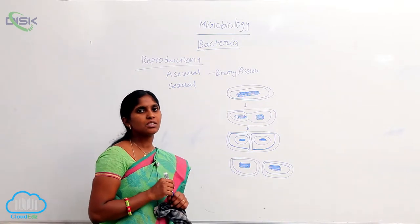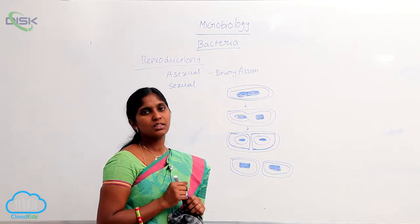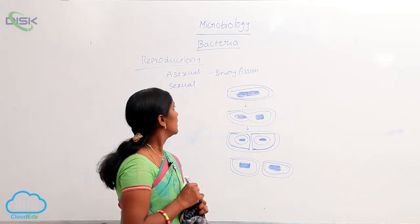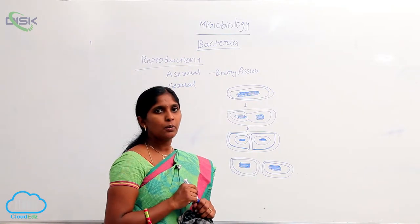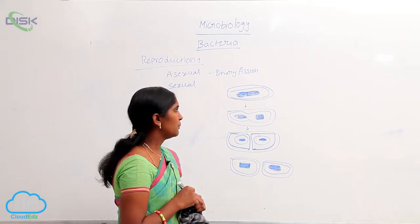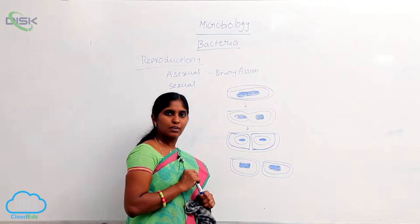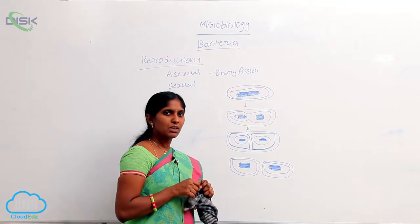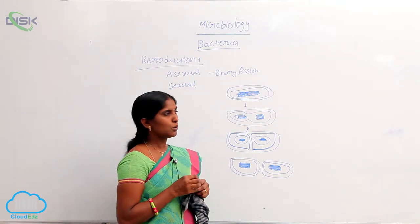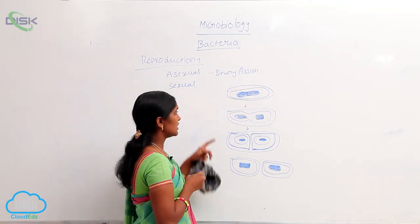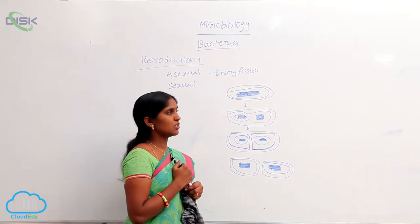Asexual reproduction is a common phenomenon; it is done by binary fission. When the bacteria is in favorable conditions, meaning available nutrition conditions, it undergoes binary fission.